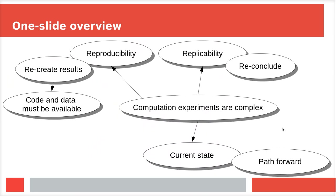The paper, in a one-slide overview, starts with the claim that computational experiments are complex, looks at current and past states, and the path forward. There's considerable effort in defining what reproducibility and replicability are. Reproducibility means recreating results from the same experiment by different analysts — for that, code and data must be available. Replicability is when you reach the same conclusion based on different data — different populations, nature reserves, cell lines. Replicability is more scientifically interesting at a bigger scale, while reproducibility is the foundation, and having reproducible science enables easier replicability.